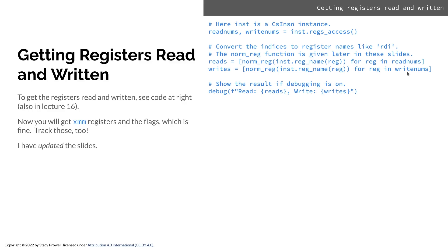For each number in writenums, I compute a new result for a new array by invoking the reg_name method on the instruction, giving it that number, which hands back a string like AX, EAX, or RAX. But those are all the same register, so I'll wrap this in norm_reg to normalize it so I just see RAX. I'll provide norm_reg for you. Once done, I should have two arrays of strings identifying the names of the registers that are read and written.